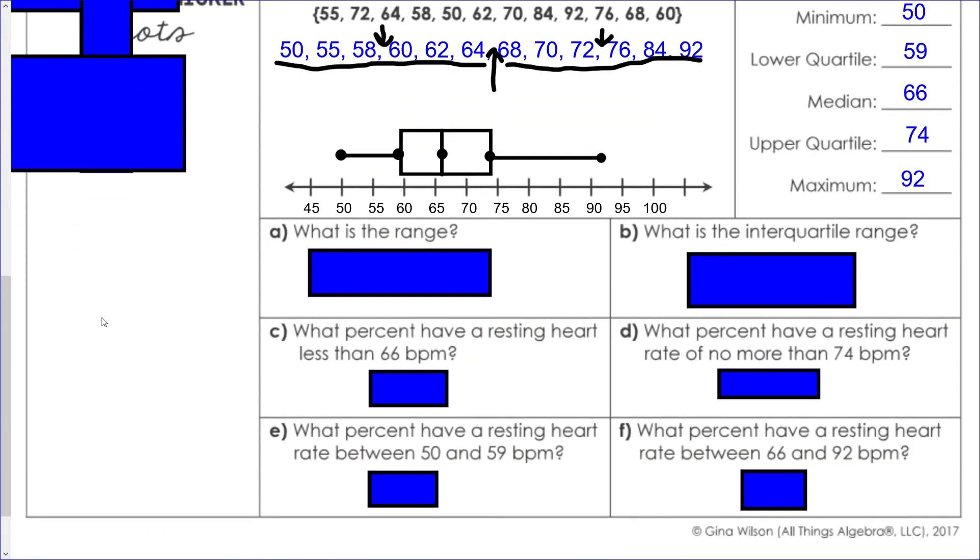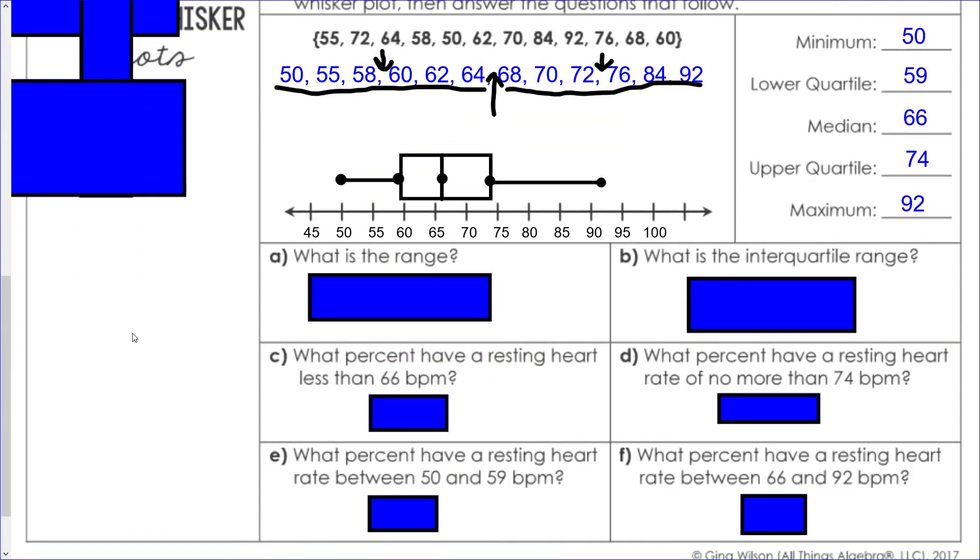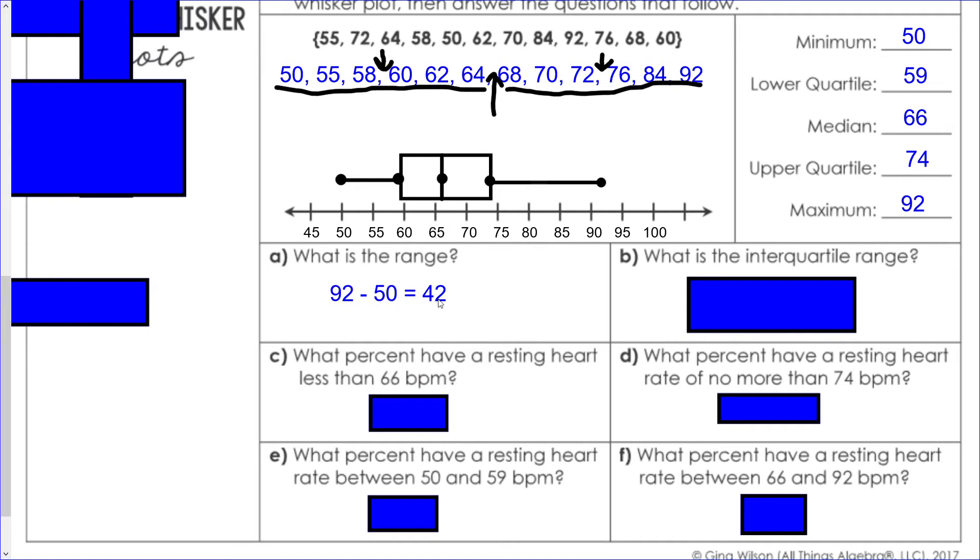What is the range? That's maximum minus minimum, so 92 minus 50 equals 42. What is the interquartile range? That's upper quartile minus lower quartile, so 74 minus 59 equals 15. That should be the size of your box as well.